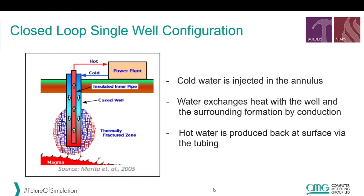Here is a sketch of the process. We have a vertical well which is completed in a hot formation. The idea is to inject cold water from the top of the well into the annulus of this well and reproduce the same water back to surface via the tubing of the same well, without the water entering the formation. The idea is to extract heat from the formation via conduction and exchange this heat at surface.